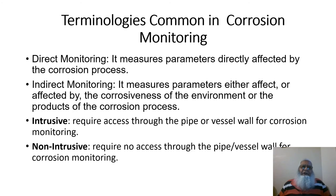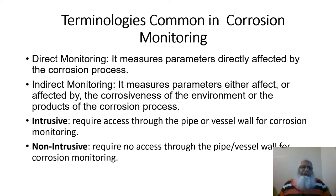This slide covers terminologies commonly used in corrosion monitoring. Direct corrosion monitoring measures parameters directly affected by the corrosion processes. Indirect corrosion monitoring measures parameters that either affect or are affected by the corrosiveness of the environment or the products of the corrosion process. Intrusive corrosion monitoring — the topic of this presentation — requires access through the pipe or vessel wall for monitoring.